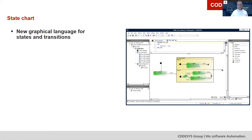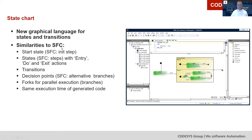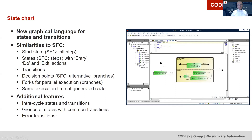Those of you familiar with the Codesys development system or IEC 61131 may notice that states and transitions are similar to sequential function chart concepts. We have a start state — analogous to an SFC init step — and states similar to SFC steps with entry, do, and exit actions. We also have transitions, decision points, and forks for parallel execution, with the same execution time of generated code. But there are additional features: intracycle states and transitions are possible, you can group states as compositions, and you can even have error transitions.